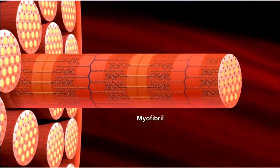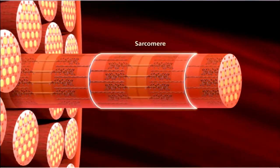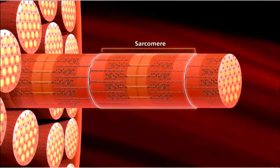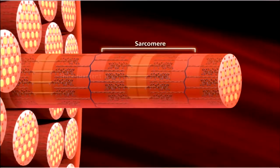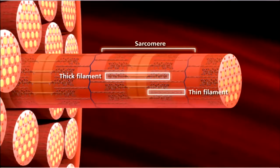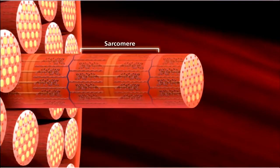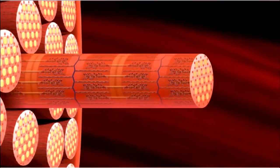Muscle fibers are composed of many myofibrils. A myofibril contains contractile units called sarcomeres. Sarcomeres run adjacent to one another down the length of the myofibril. Each sarcomere consists of alternating thick and thin protein filaments, giving skeletal muscle its striated appearance. The muscle contracts when these filaments slide past each other.